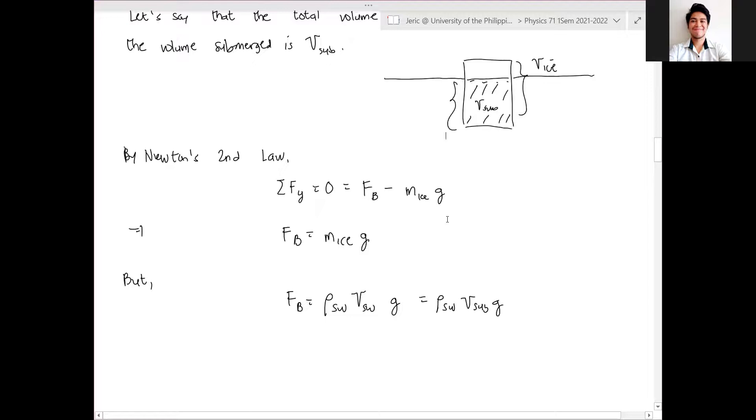There's a v-submerged, this is not v-ice. So this implies that the density of seawater, volume of the submerged object times g, is simply mass of ice times g.